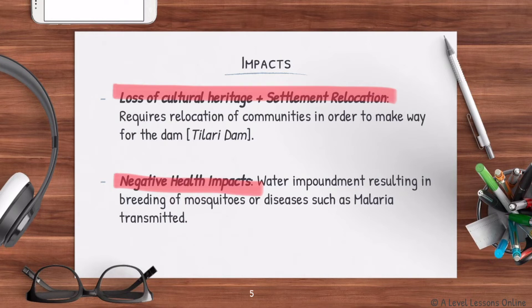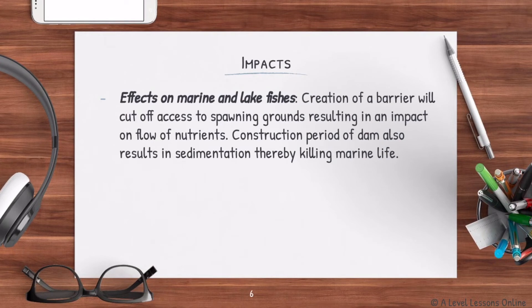An example for social impacts would be the Artibonite Dam — go and study more on it. For biological impacts, marine life in the river is affected. When a dam is constructed, there is an impediment preventing nutrients from flowing, causing fish and other marine life to die. Sedimentation from construction also causes choking of fish, resulting in a loss of marine life.